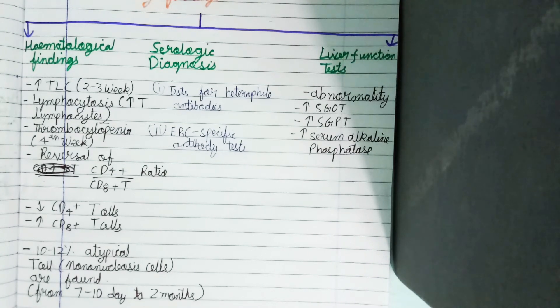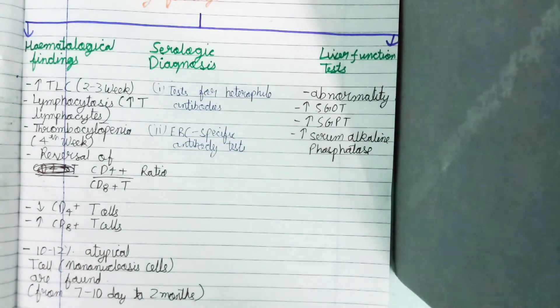EBV antigen is detected by CSF or PCR method. This is all about infectious mononucleosis. Hope you liked this video. Press the like button and subscribe. Thank you.